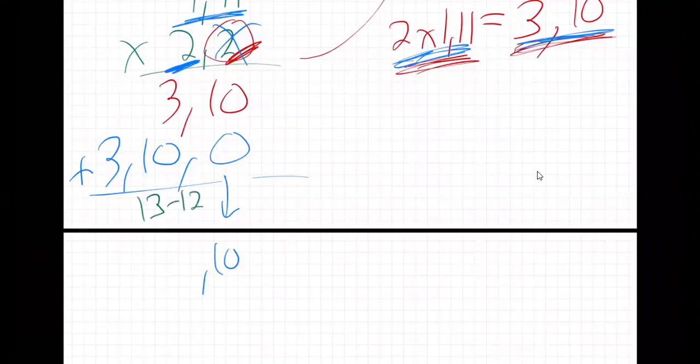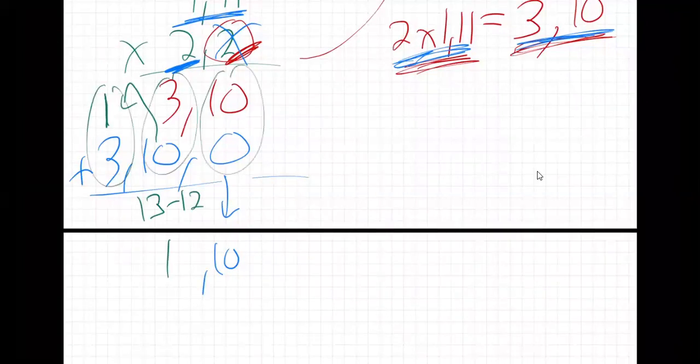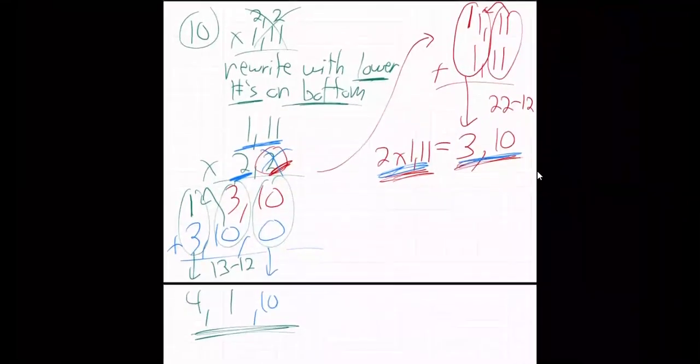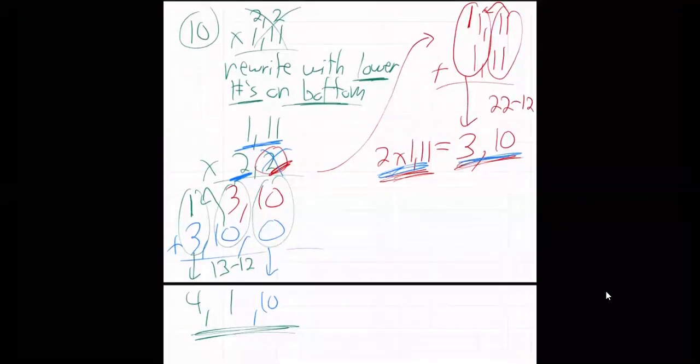Subtract 12. That leaves a 1. A 1 in this place. And we carry. The 1 and 3 is 4. So 4,1,10. Does that make sense? What happened there? Got to put the commas in base 12. Let me use it down so you can see it. So there it is. There's how we do that problem.